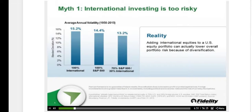Adding international provides diversification benefits — correlations are below one — and you can overall reduce your risk. So while people may think that international is more risky, adding international actually reduces overall risk. As a follow-up: does international add growth or improve the return profile of a portfolio? What would this chart look like with return data?